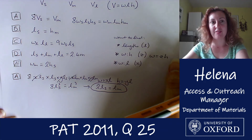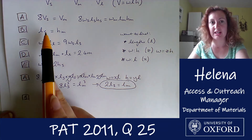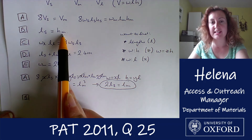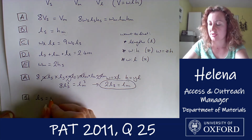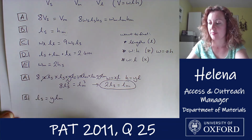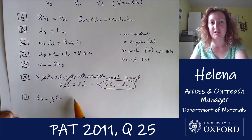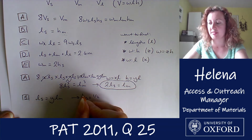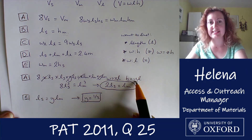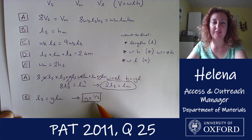Moving to equation B: ls equals hm, and writing the height in terms of the length gives ls equals y times lm. We already found that lm equals 2·ls, so substituting in: ls equals y times 2·ls. Comparing the two sides, we can see that y equals one half. So the ratio of height to length is 1/2. This isn't one of the ratios we were explicitly asked to find, but I'll put a box around it as it'll come in useful.